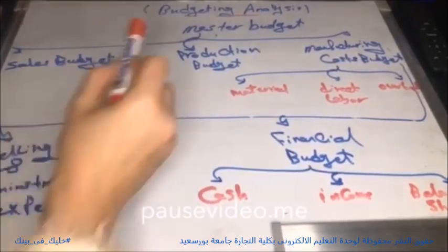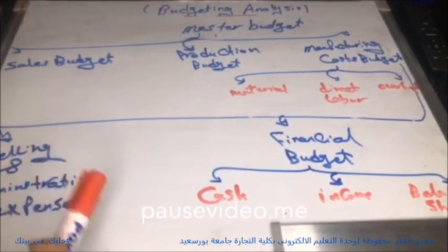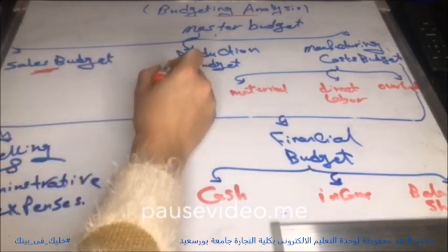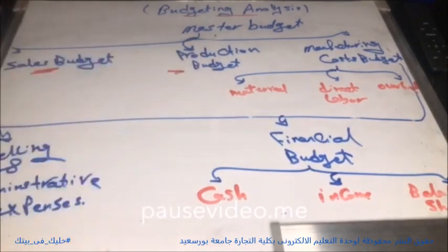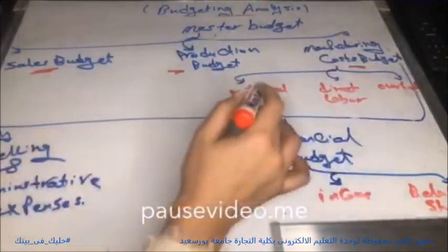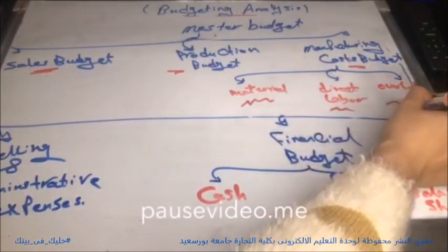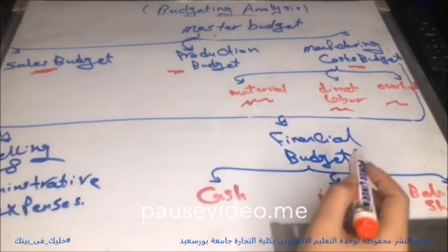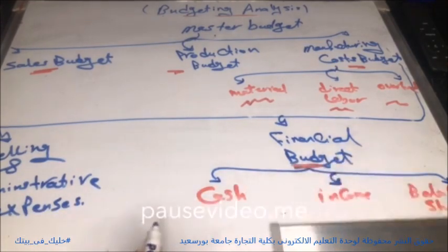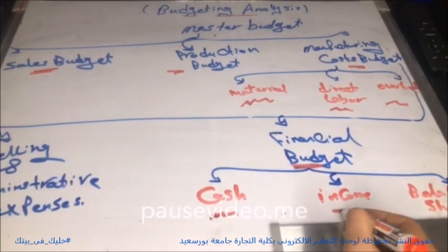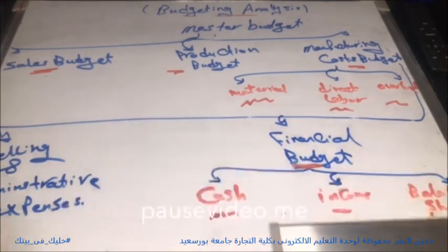We must prepare the master budget in this sequence: sales budget first, second production budget, third manufacturing costs budget — which includes material, direct labor, and overhead — then selling and administrative expense. Financial budget at the end consists of cash flow, income statement, and balance sheet.